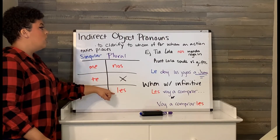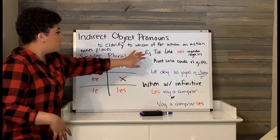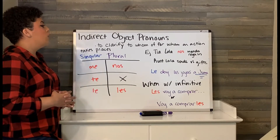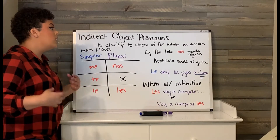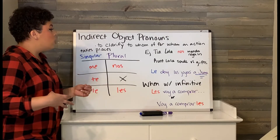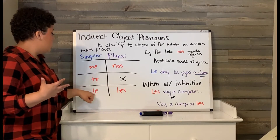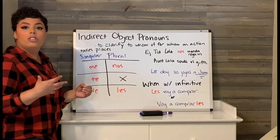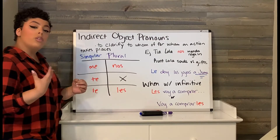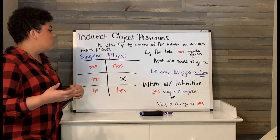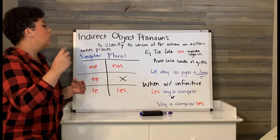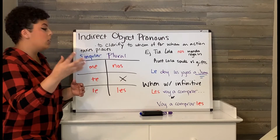les. An example of that is: tía Lola nos manda regalos — Aunt Lola sends us gifts. When you're using le or les, it's kind of hard to say who you're talking about or talking to. So a lot of times, that is accompanied with 'a' plus your noun, or whoever the action is happening to.